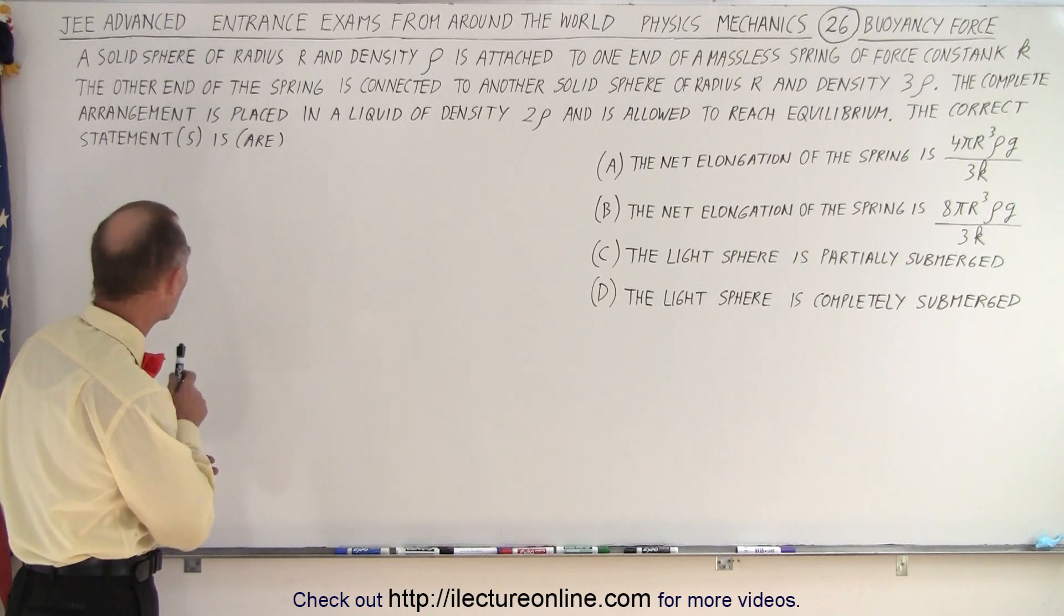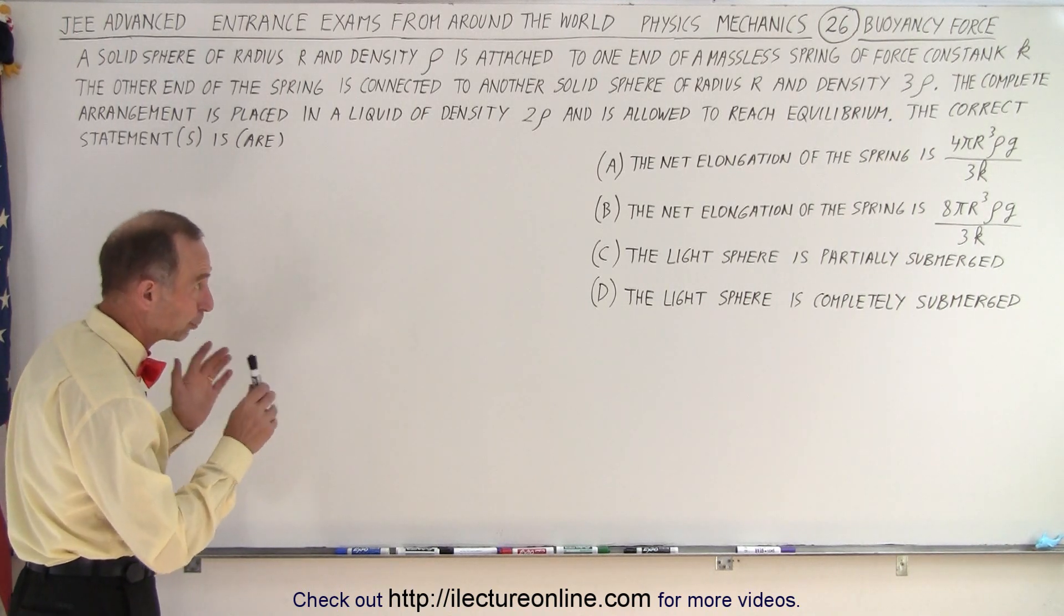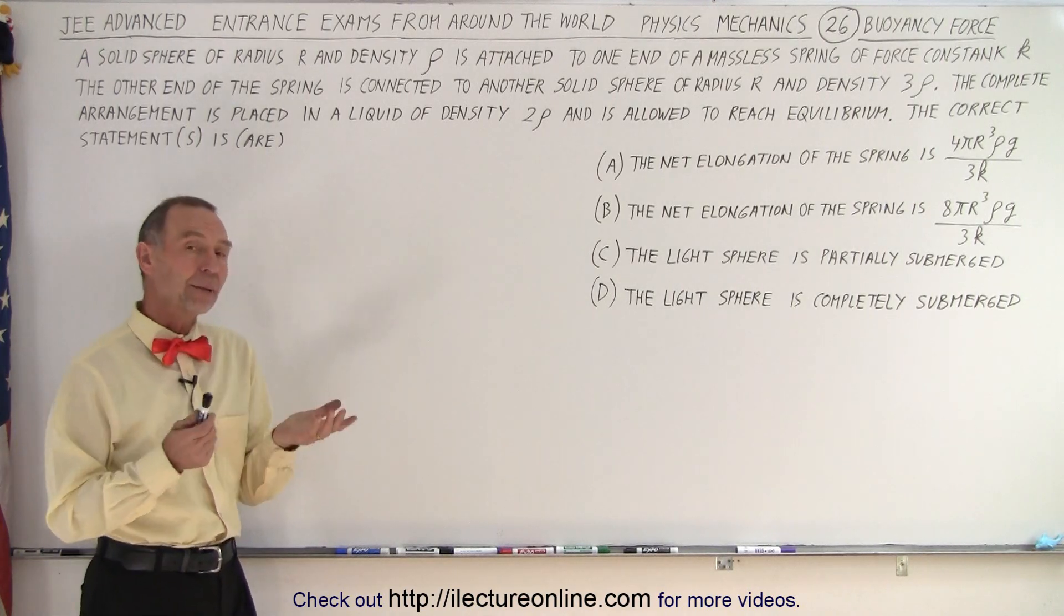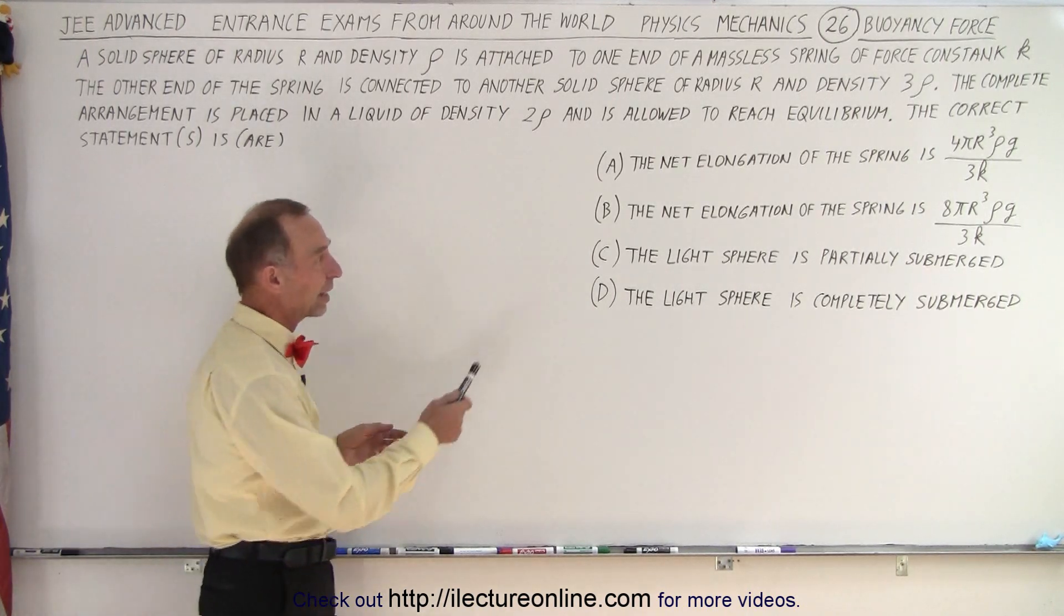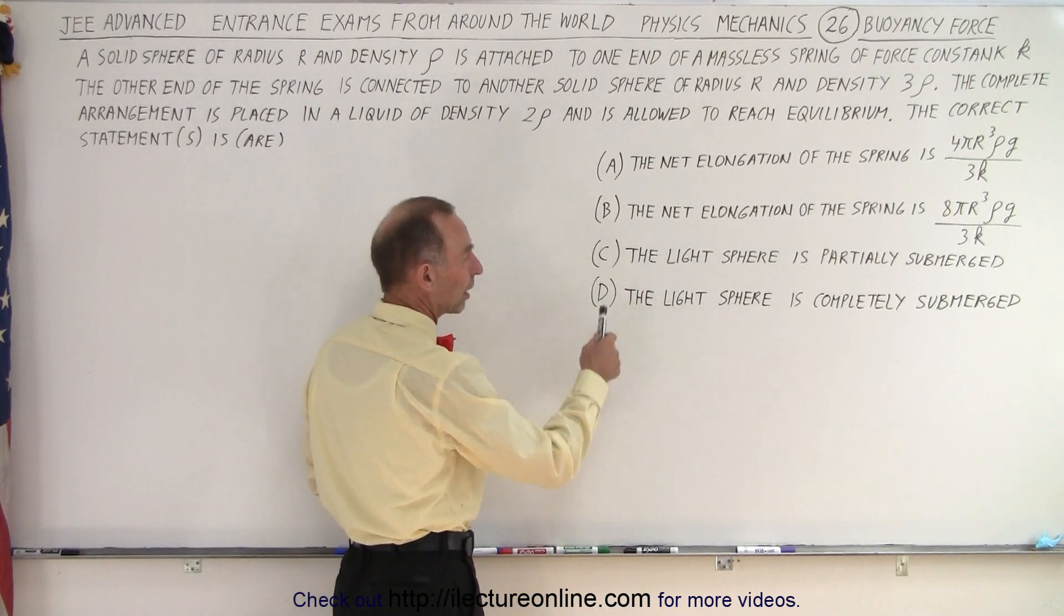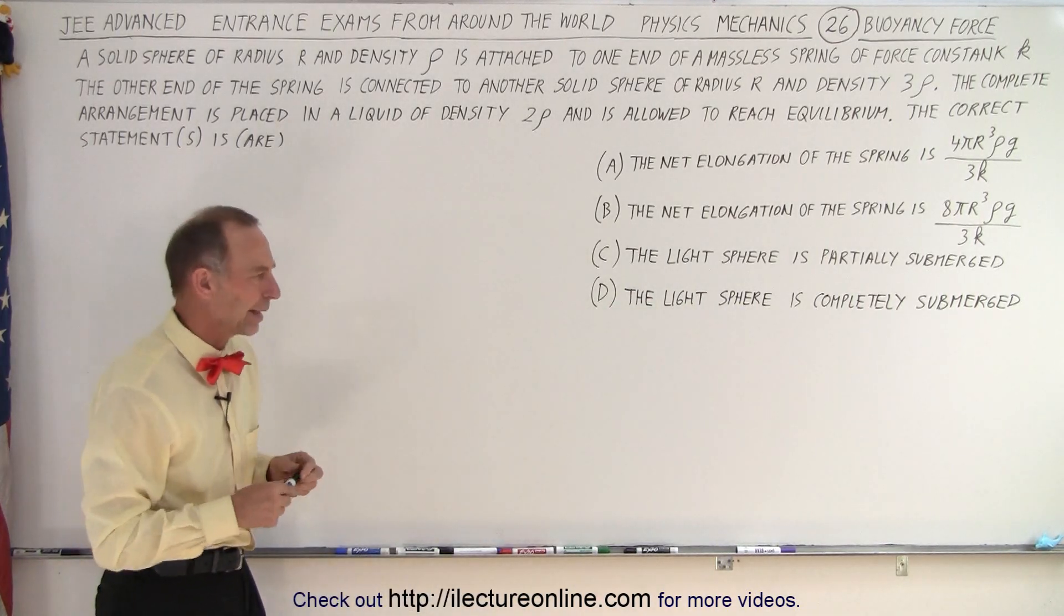The complete arrangement is placed in a liquid of density 2 rho and is allowed to reach equilibrium. The correct statement or statements are, well here's four of them. And the bottom two are straightforward. It says the light sphere is partially submerged or the light sphere is completely submerged.